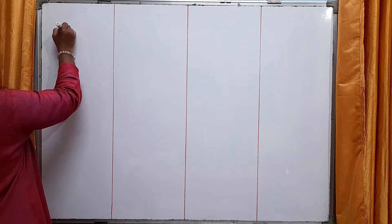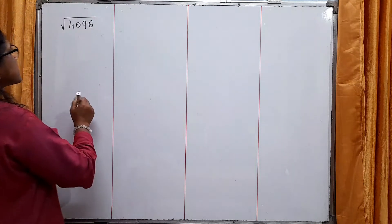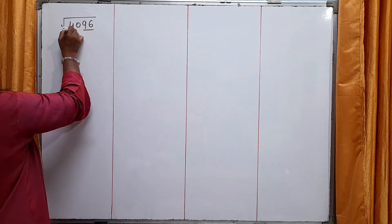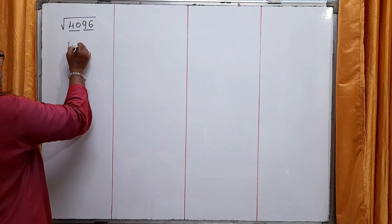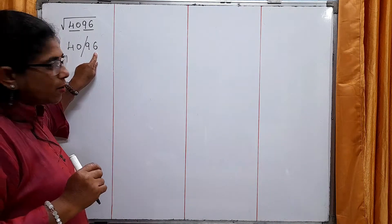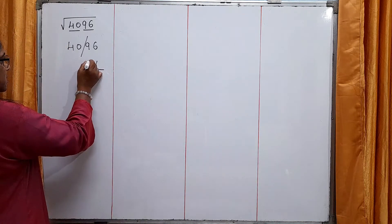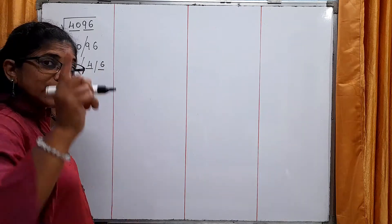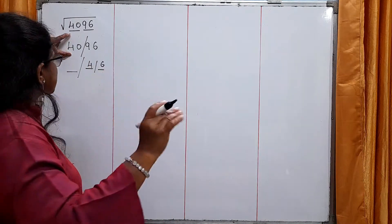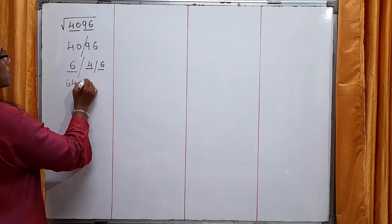First example: let's find the square root of 4,096. What we have to do? Divide this number into two parts — the last two digits and the first two digits. Here the unit's place is 6, so the possible unit's place of this square root is either 4 or 6. Now, the number here is 40. The perfect square less than 40 is 36, which is 6×6. So here the tens digit is 6, and our answer is either 64 or 66.